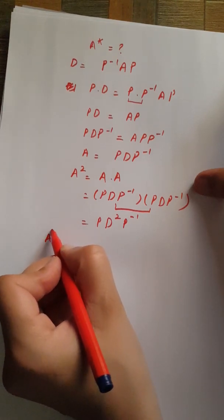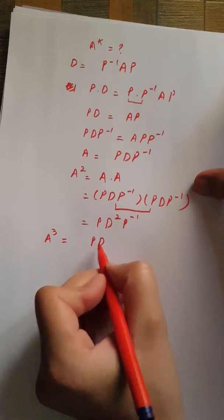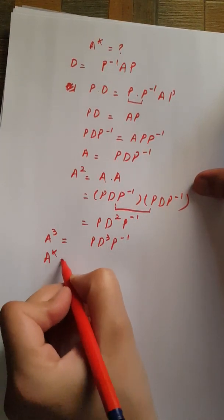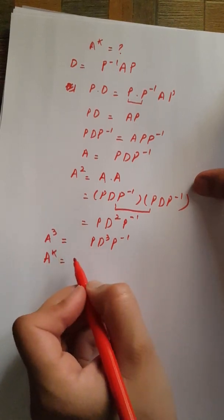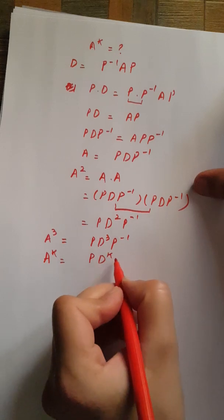For A cube, we write it as PD cubed P inverse. Extending this formula for positive integer k, we have A to the power k equals P D to the power k P inverse. Let's do an example where A equals [7, 2; -4, 1].